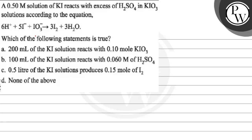Let's read this question. The question says: a 0.5 molar solution of KI reacts with excess of H2SO4 in KIO3 solutions according to the equation: 6H⁺ reacts with 5I⁻ and IO3⁻ to give 3I2 plus 3 moles of water.